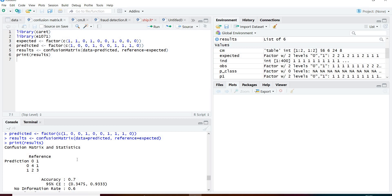Then we create a confusion matrix using the function confusion matrix where data corresponds to the predicted value and reference corresponds to the actual or the expected value.